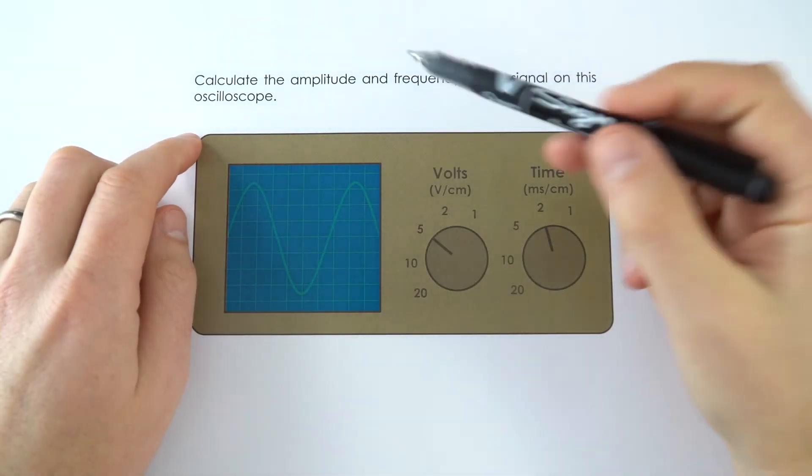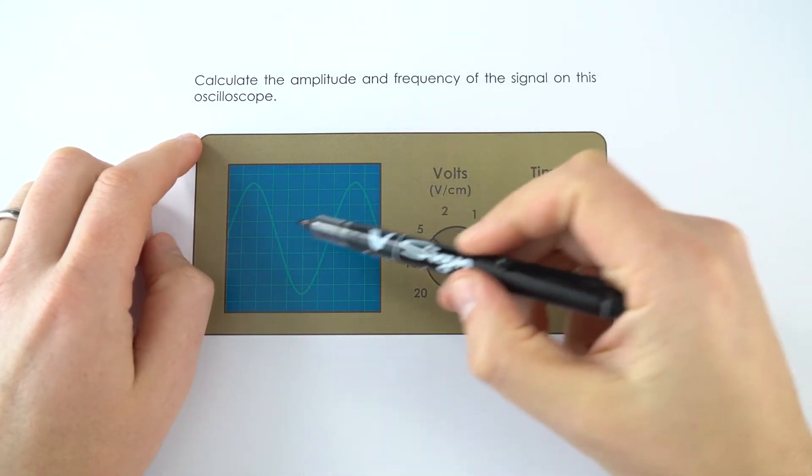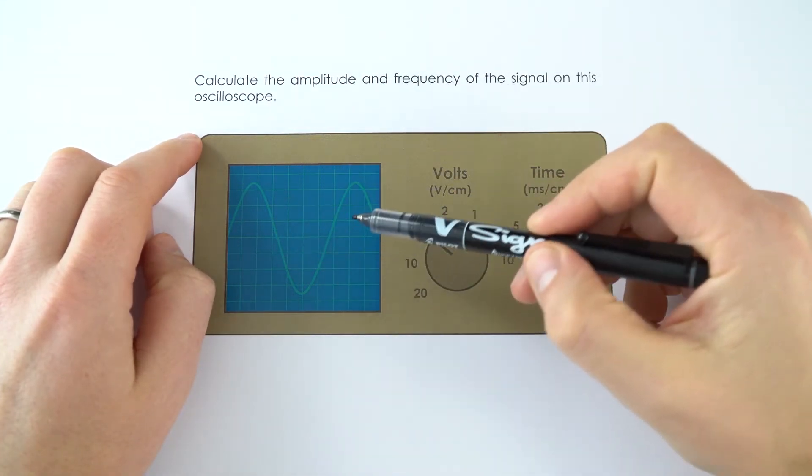In this example we're going to be looking at the amplitude and frequency of this signal which is displayed on an oscilloscope.